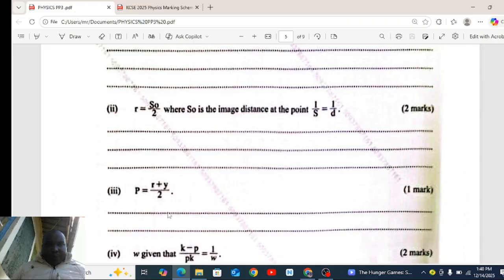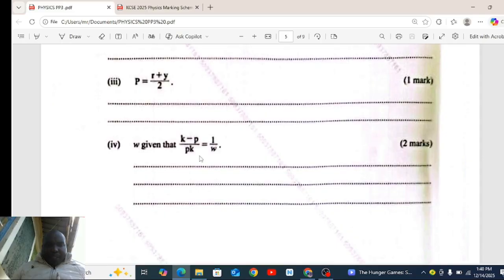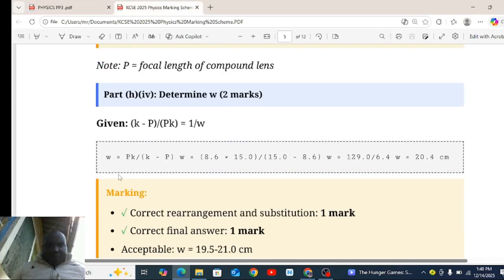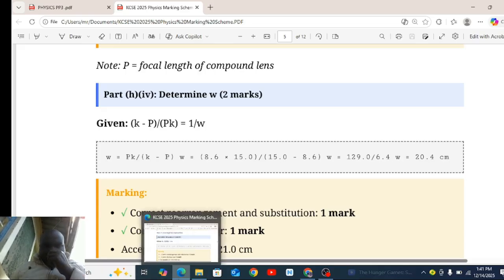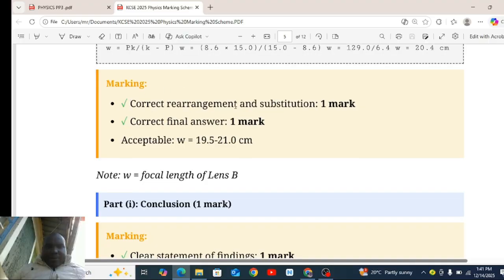Roman 4, w, given that k minus p over pk equal to 1 over w. The answer, final answer is 20.4 centimeters. Marking points: correct rearrangement and substitution, correct final answer. Accept w is equal to 19.5 to 21.0. W is the focal length of lens B.